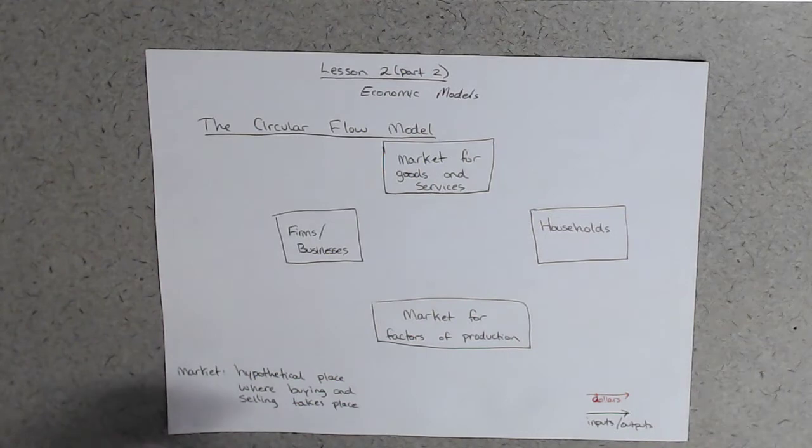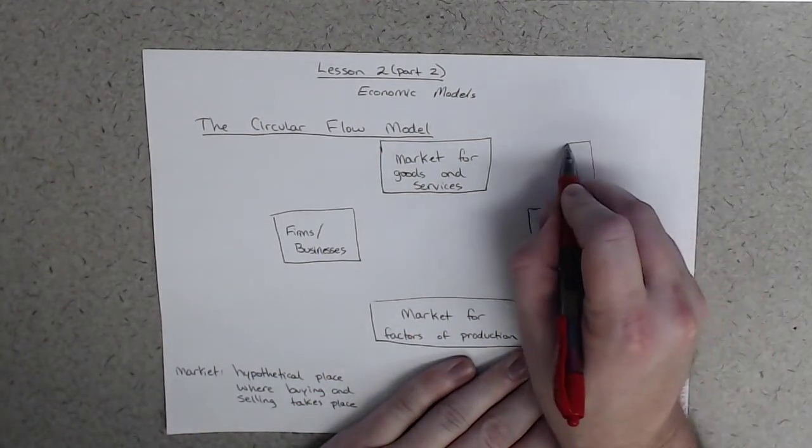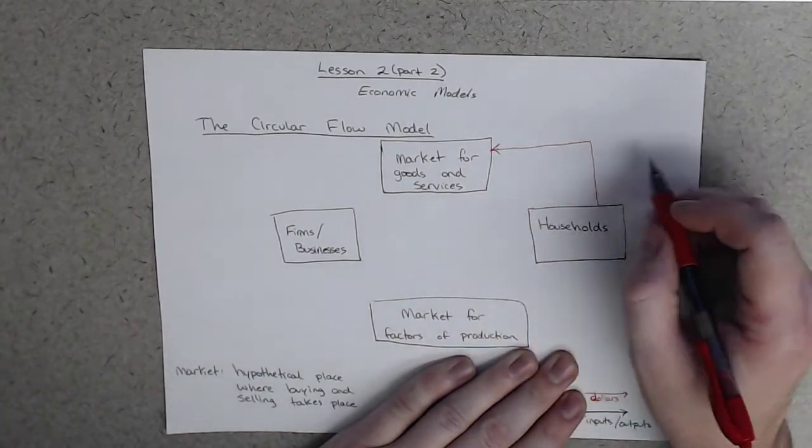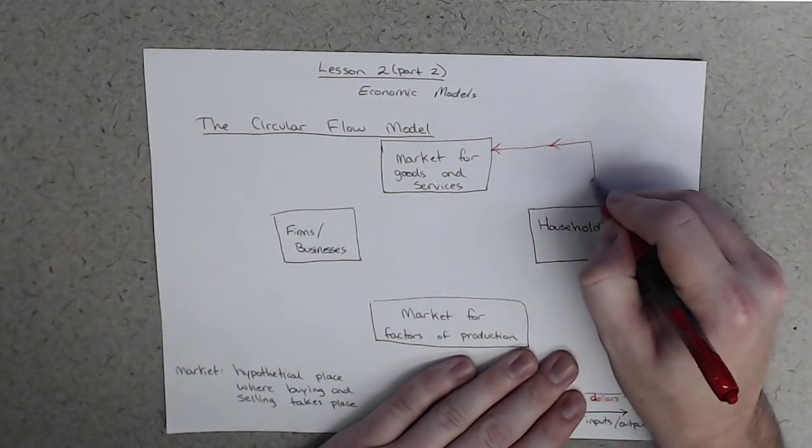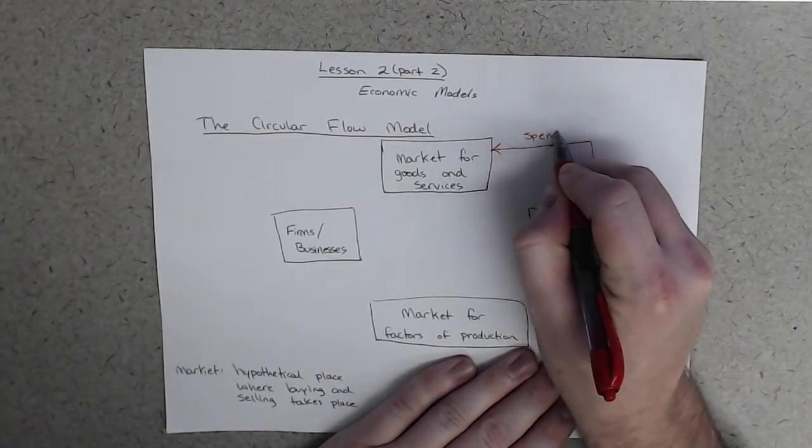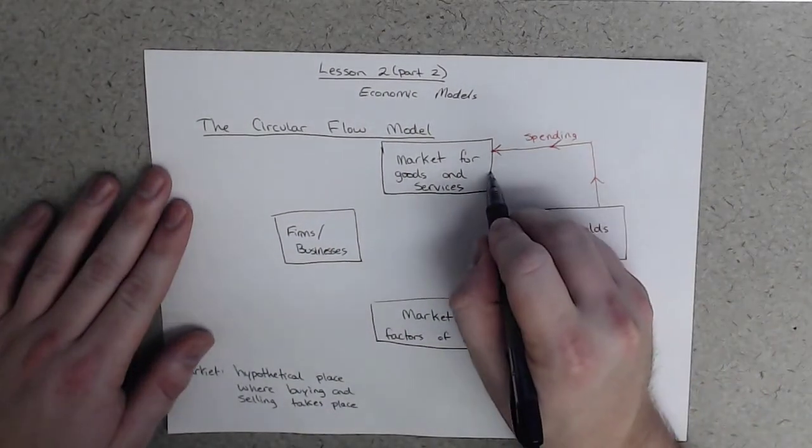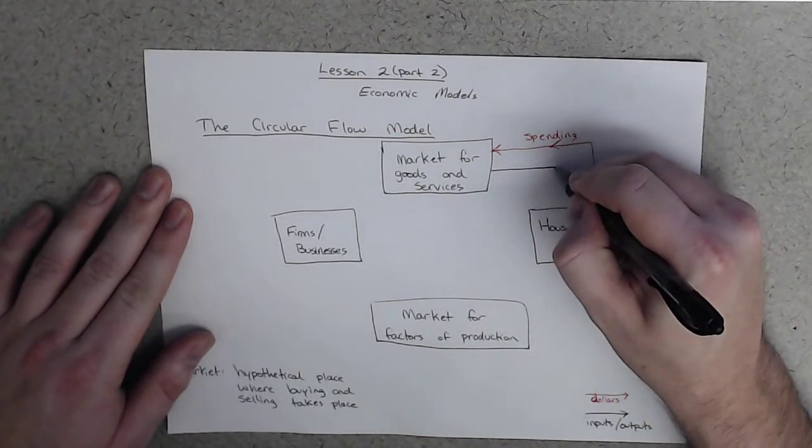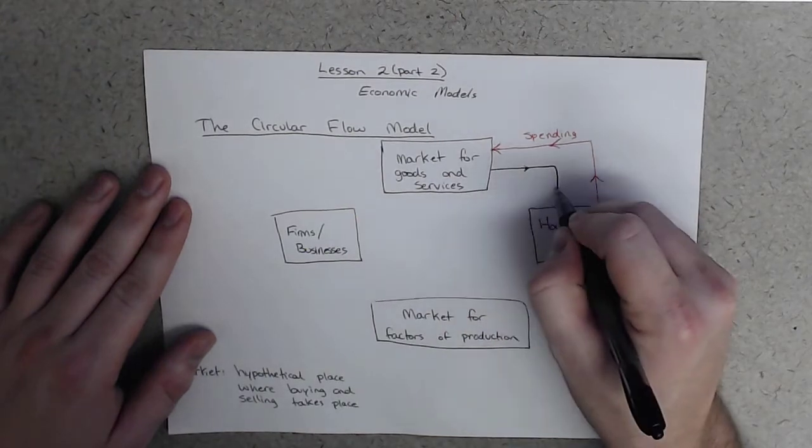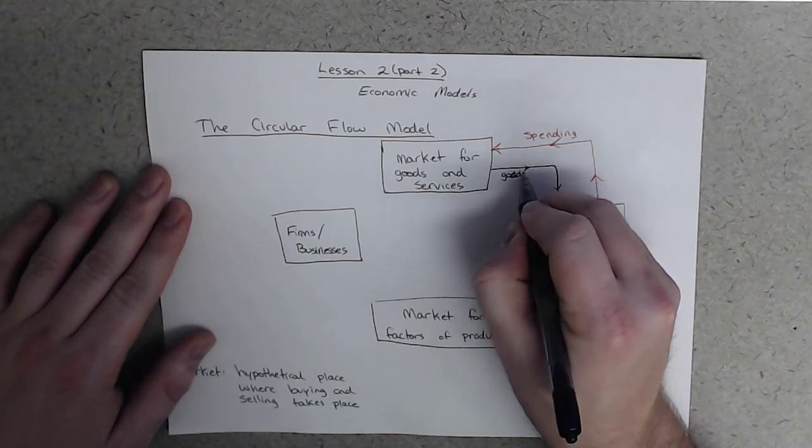So obviously households will send money to the market for goods and services. And we just call this spending. And in return, the market for it, they buy goods and services.